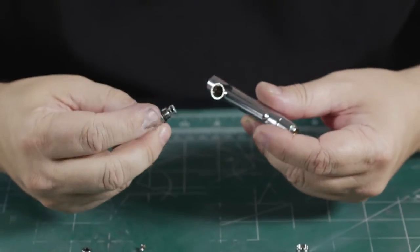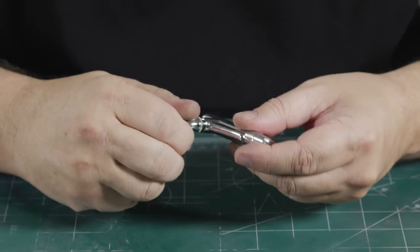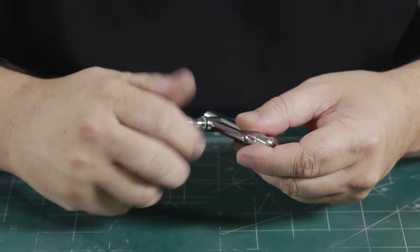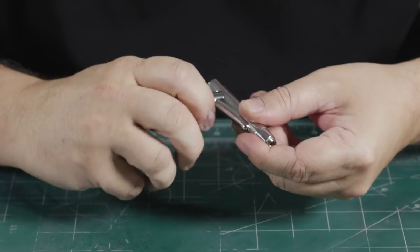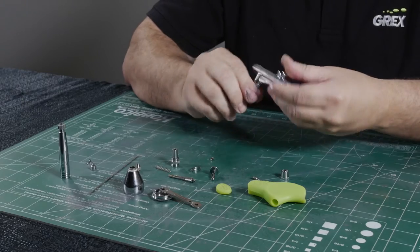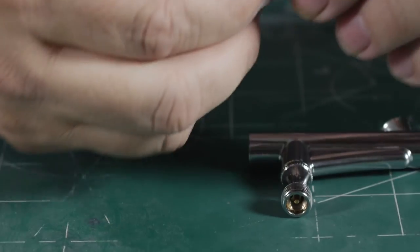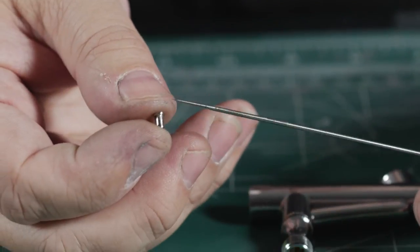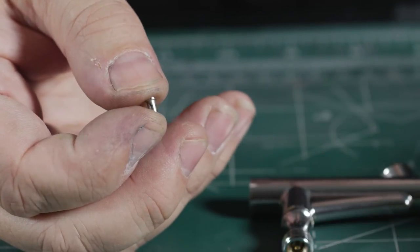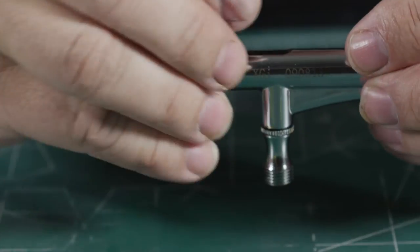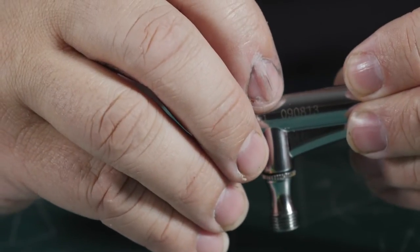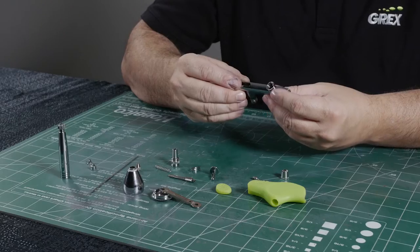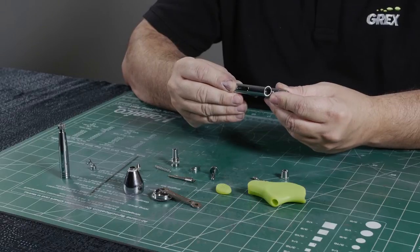First we're going to address the air valve. Simply thread it into the base of the airbrush body by hand. Hand tight is fine. And now we have the piston, which in profile has this T-shape to it. You want to keep it orientated that way when you drop it into the airbrush. If it goes in upside down you need to do it over again. And there it dropped in perfectly.